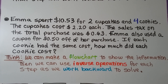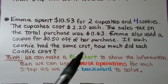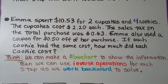Emma spent $10.53 for two cupcakes and four cookies. The cupcakes cost $2.20 each. The sales tax on the total purchase was $0.63. Emma also used a coupon for $0.50 off her purchase. If each cookie had the same cost, how much did each cookie cost? The problem gives us the price of the cupcakes, the amount of the tax, and the coupon, but we don't know the cost of each of the four cookies. We can make a flowchart and use inverse operations to work backward.